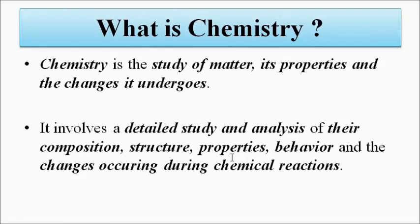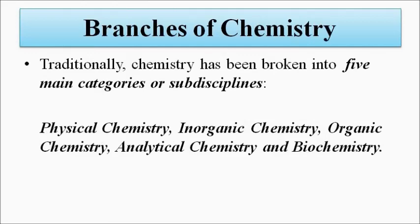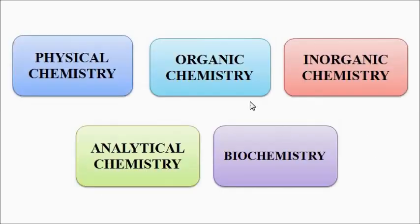Now the branches of chemistry. Whenever we come across chemistry, the three subcategories that come to mind are physical chemistry, organic chemistry, and inorganic chemistry — those three fields we study in high school and also during college. But there are also two more sub-disciplines to add. We can divide it into five main categories: physical chemistry, inorganic chemistry, organic chemistry, analytical chemistry, and biochemistry — the five main sub-disciplines of chemistry.